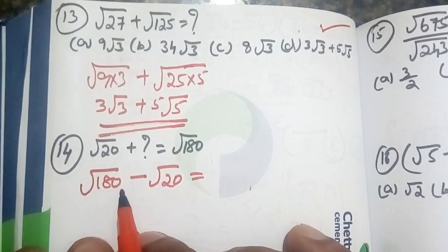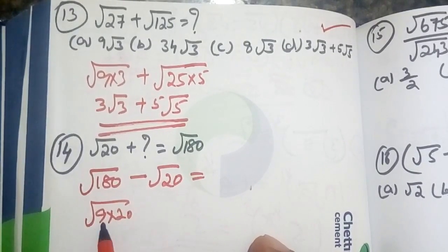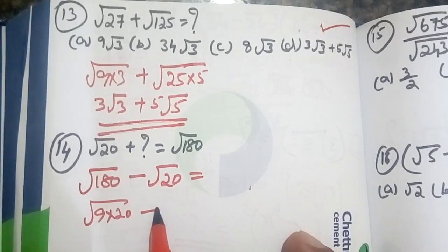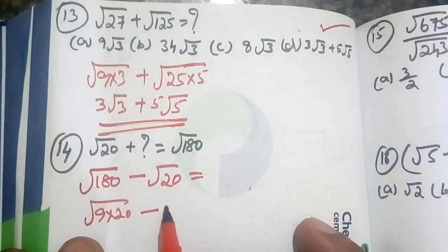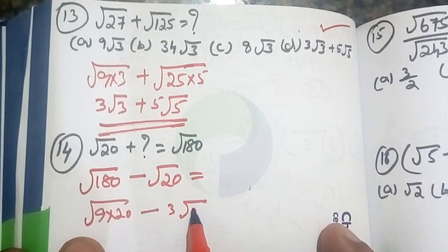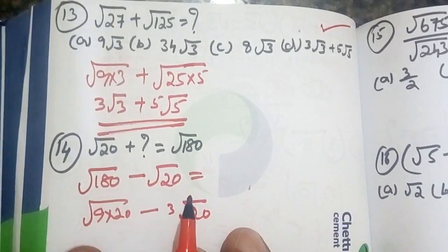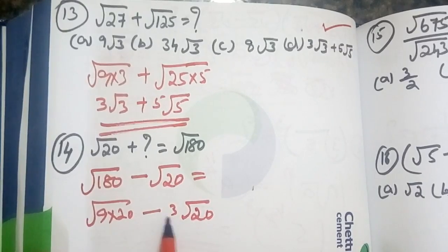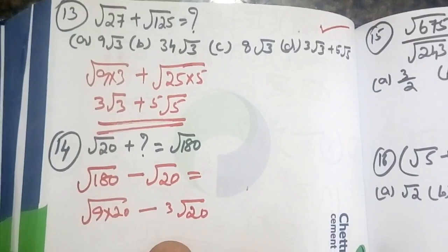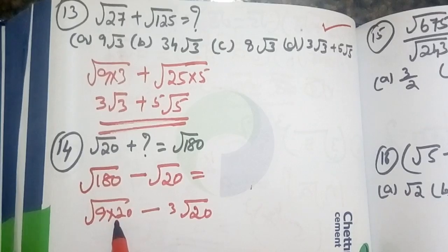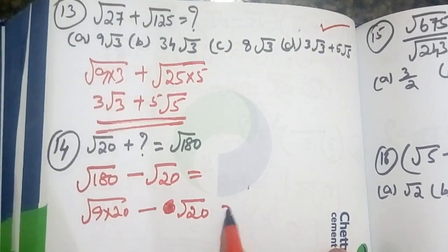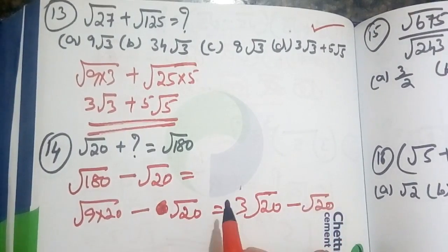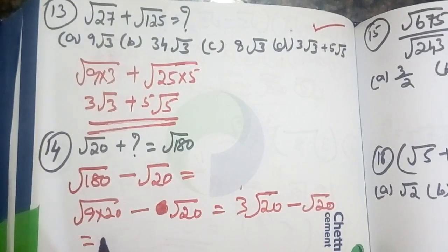Root 180 equals root 9 into 20, which is 3 root 20. So, 3 root 20 minus root 20 is equal to 2 root 20.